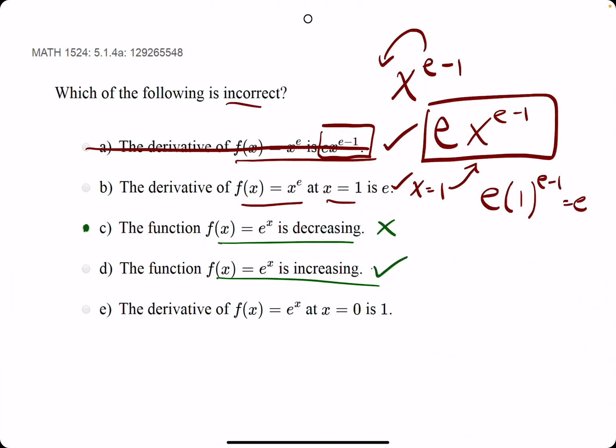Let's go through the rest of them, though. So e to the x is increasing. And then let's start with this last one. The derivative of e to the x at x equals zero is one. Now, as we go through this section, there's a few derivatives you need to memorize. One of them is the derivative of e to the x. The nice thing about the derivative of e to the x is that it's just e to the x. It does not change.